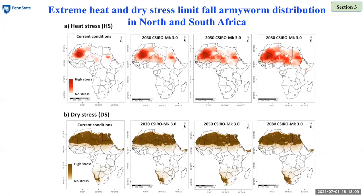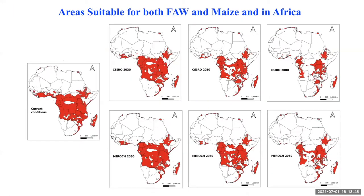When we look at the major factors limiting fall armyworm distribution in North and South African countries, we find that heat and dry stress are the primary limiting factors. If these dry areas receive more rainfall than the climate model predicted, fall armyworm could infiltrate these areas and cause economic loss. Since the major host of fall armyworm is maize, we also mapped suitable areas for maize cultivation, and took the intersection between suitable areas for fall armyworm and its major host maize to better understand the risk in Africa.